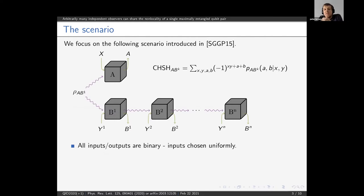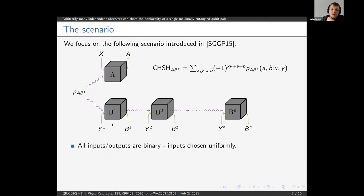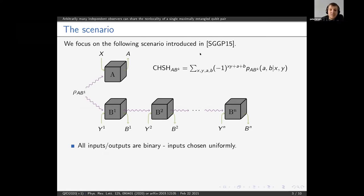In this work we investigate a particular sequential non-locality generation scenario that was introduced in a prior paper. In this scenario, some initial entangled state is shared between Alice and Bob1. When Bob1 has performed his Bell test, he passes on the post-measurement state to Bob2, who then performs his Bell test and passes on the post-measurement state, and so on until Bobn has performed his Bell test. The figure of merit is the CHSH violation between Alice and Bobk for each Bob.